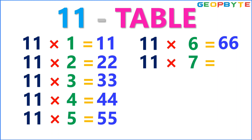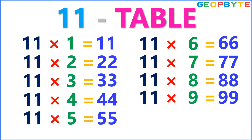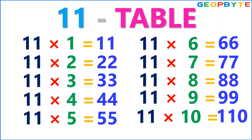11 sevens are 77. 11 eights are 88. 11 nines are 99. 11 tens are 110.